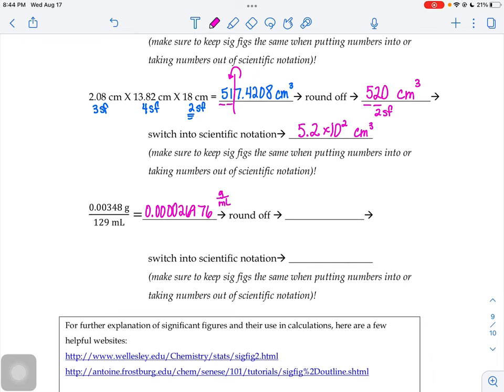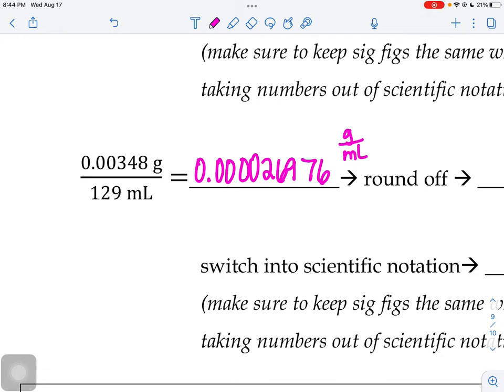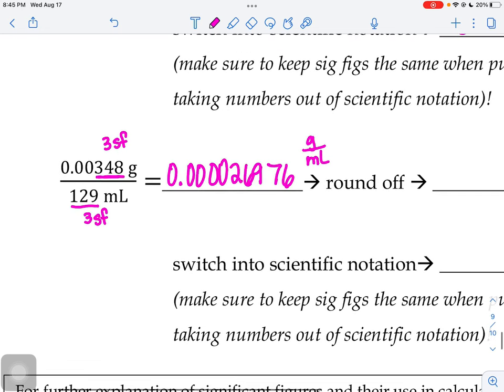Now we've got to round it. So we have to count the sig figs in our original measurements. 0.00348. The first zero does not count because he's to the left of the decimal, and there's no sandwich. There's no bread on the other side, so he doesn't count. And then these couple of zeros here, they're to the right of the decimal, but not to the right of anything significant. So we only have three sig figs here, the three, the four, and the eight. This bottom number also three sig figs. So that means we have to take our answer and make it only have three sig figs.